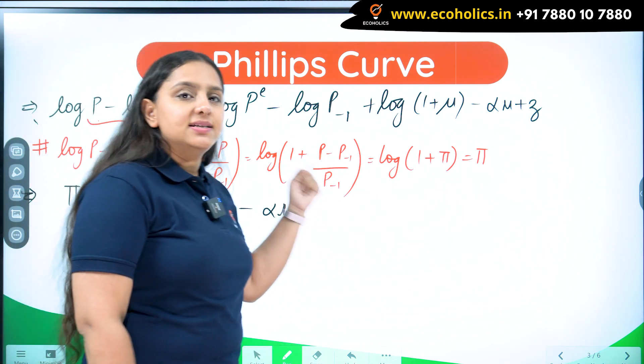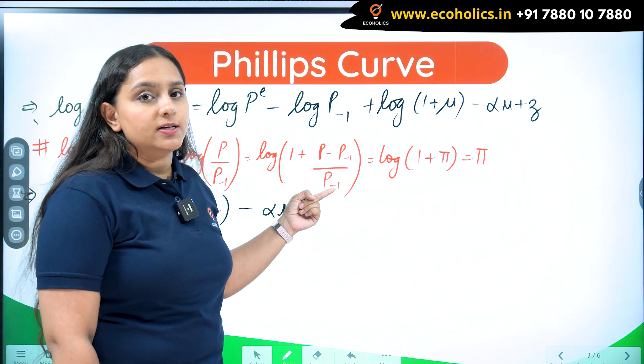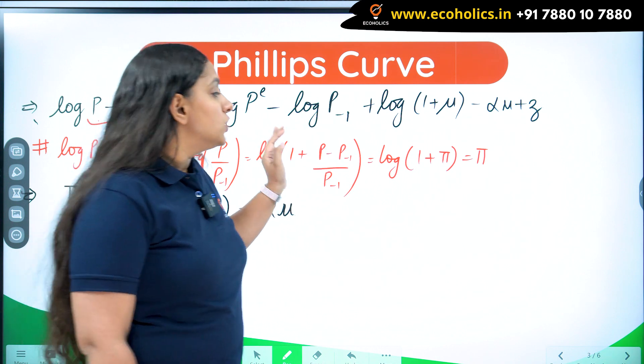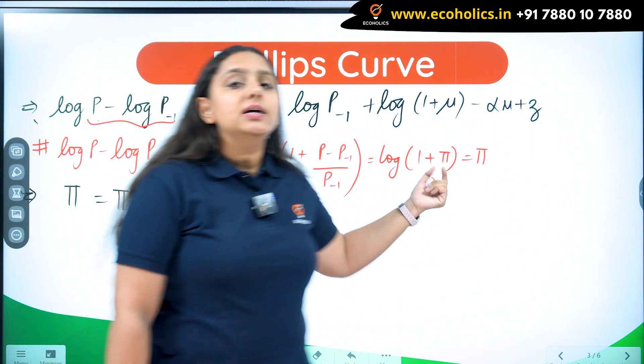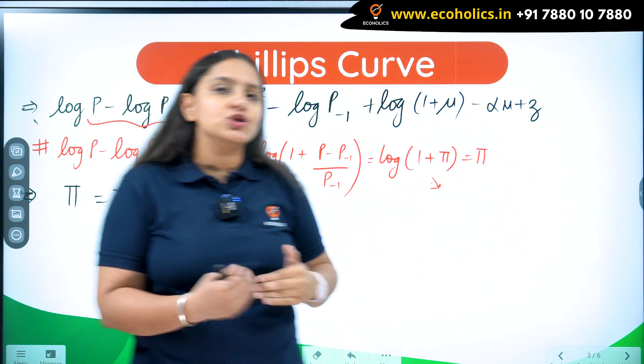What is this? Prices today minus prices yesterday divided by prices yesterday. This is inflation, the inflation rate. So I have got 1 plus pi. Since pi is going to be a small number, the inflation, if inflation is small, I can write log(1 plus pi) equals to pi.